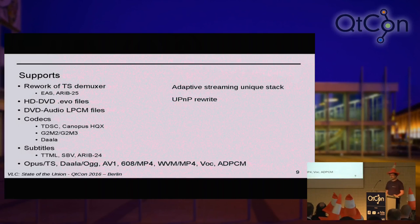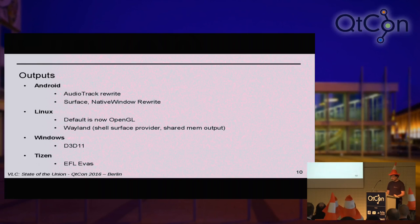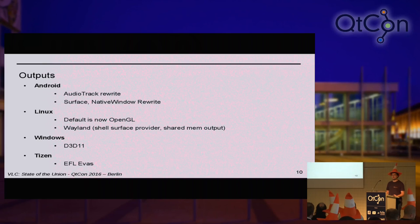A lot of work on VLC 3.0 about supporting new stuff or old stuff or crazy stuff like CEA-608 inside MP4, WMV inside MP4, or some HD DVD file support. And because we are getting better, we spent a lot of time writing most of the outputs, mostly for Android and Windows, where we have a Direct3D 11 output and wrote everything on Android. So that's mostly the big stuff for VLC in general. Now Thomas is going to speak about what he's been doing on the core of VLC.